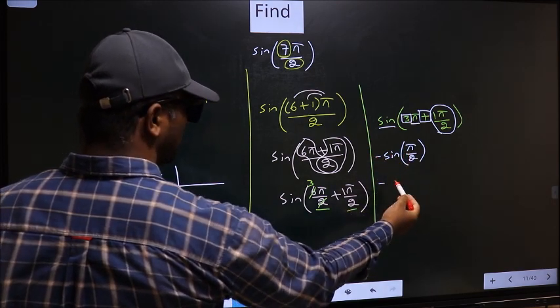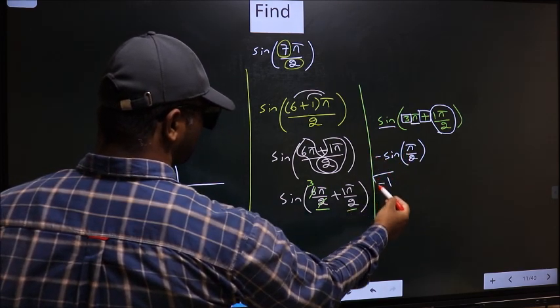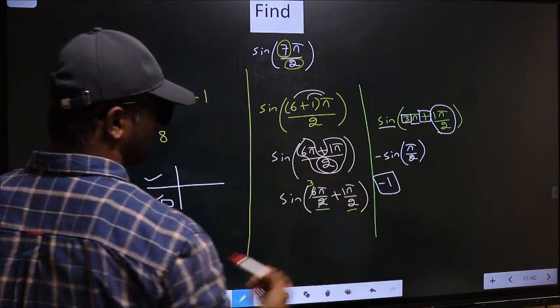So minus sine π/2. Sine π/2 is 1, so this is our answer: -1.